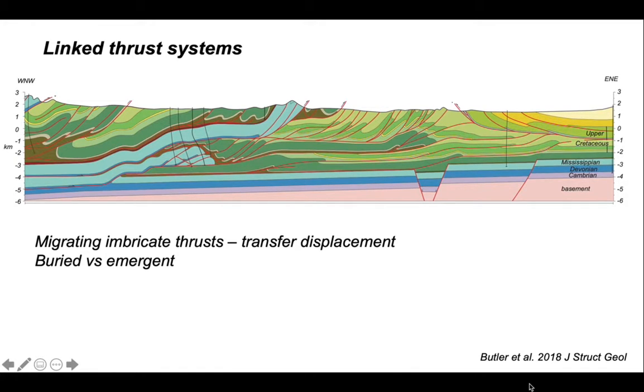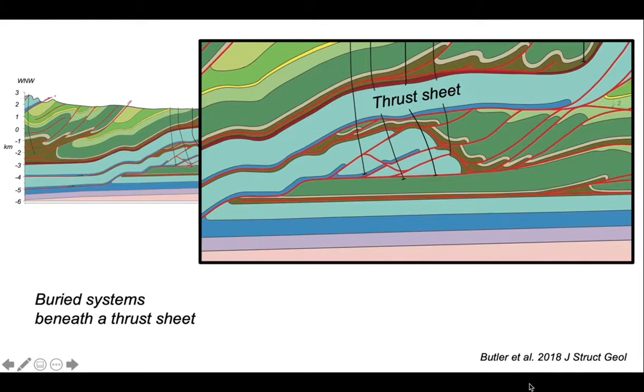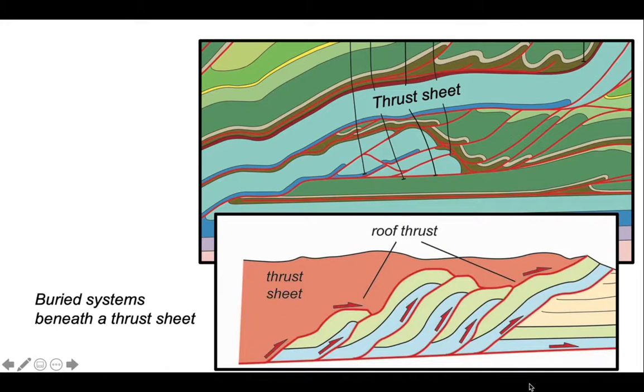So let's start off looking at a buried system that's part of this cross section. Let's zoom in. What we can see is we've got stacked up units beneath a thrust sheet that is acting as a cap or roof to these underlying ones. So here's some terminology. That thrust sheet acts as a roof.